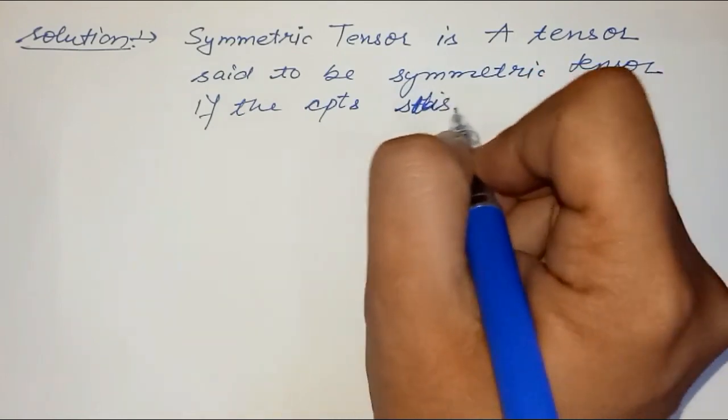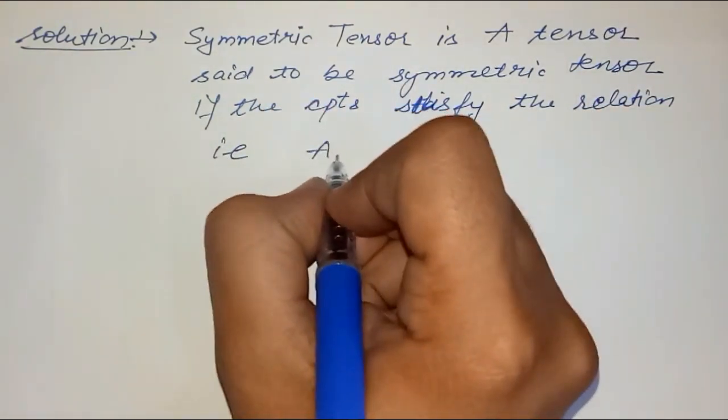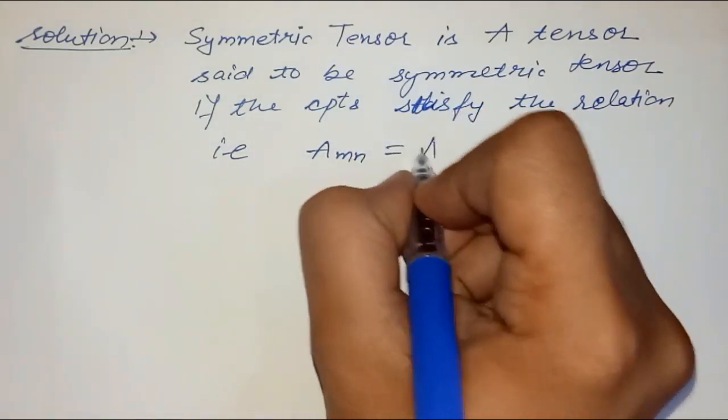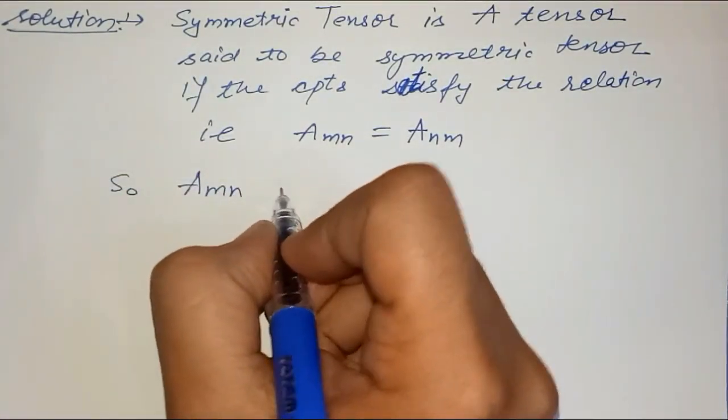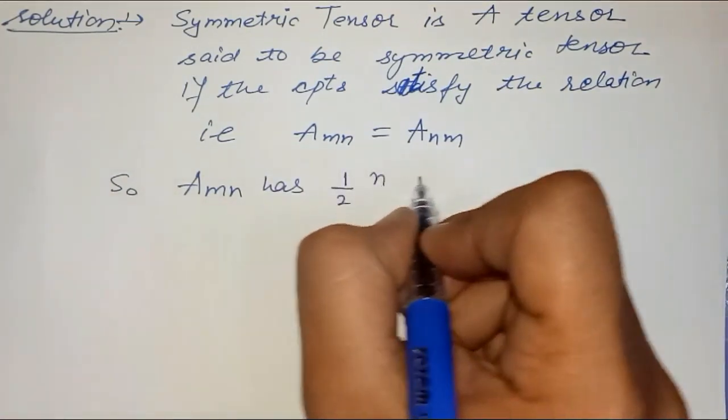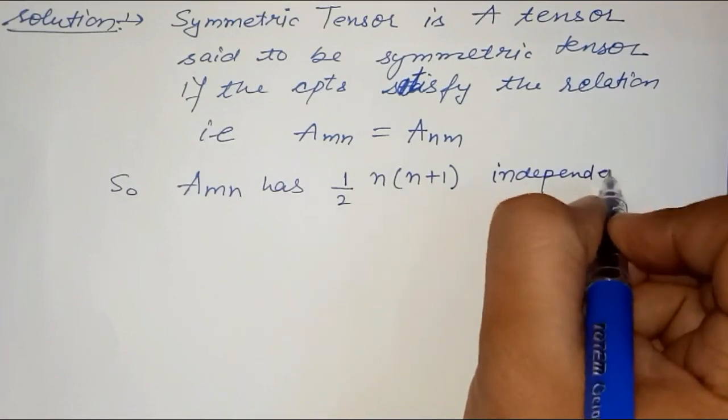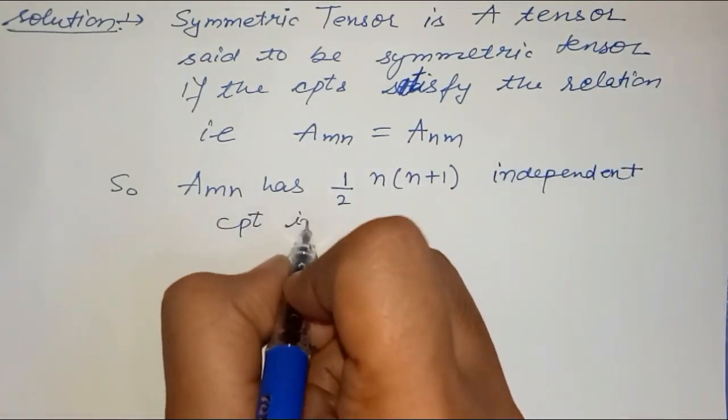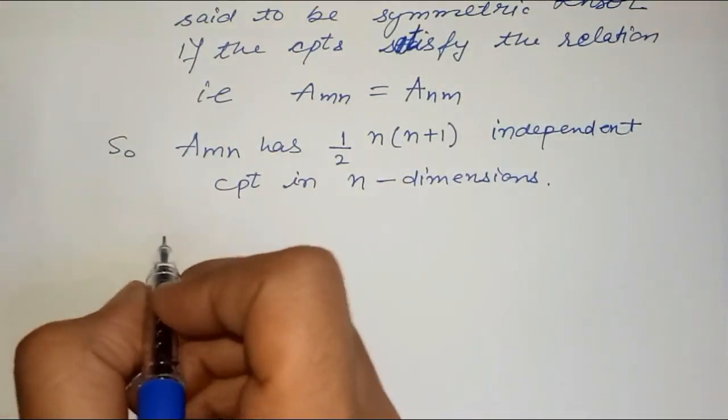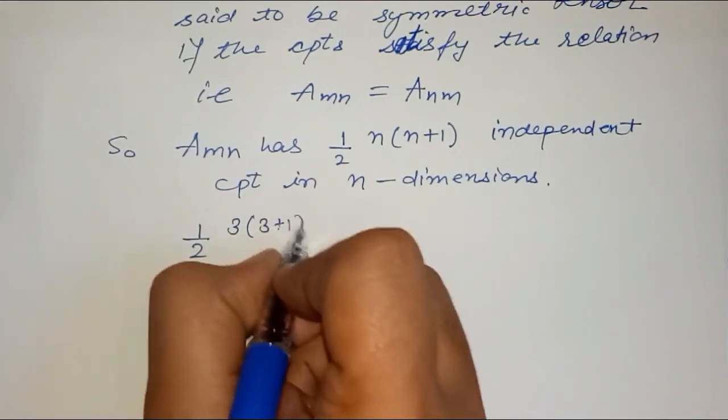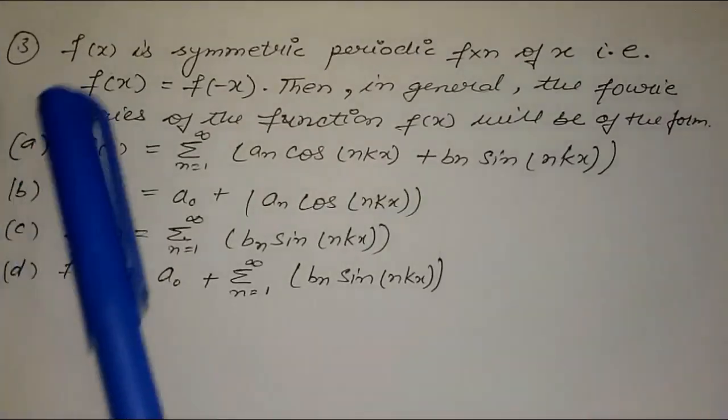Symmetric tensor a_mn has 1/2 n(n+1) independent components in n dimensions. So the solution is 1/2 times 3 times (3+1), that equals 6. C is our answer.